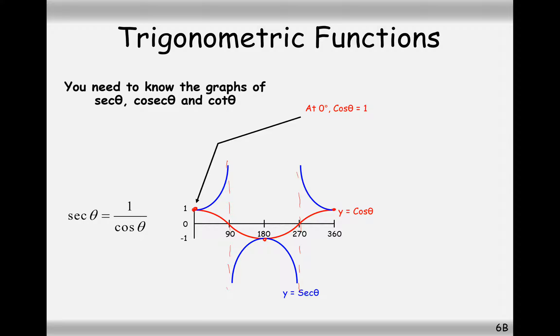Again, intersection points at 0 degrees, 360 degrees, and 180 degrees. Undefined whenever the graph is equal to 0. So we get asymptotes there and there.